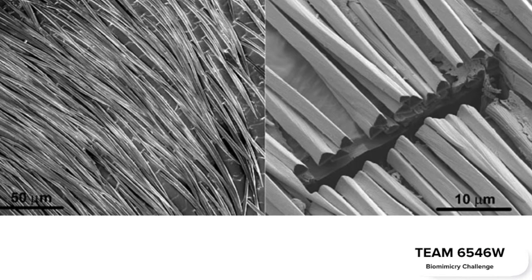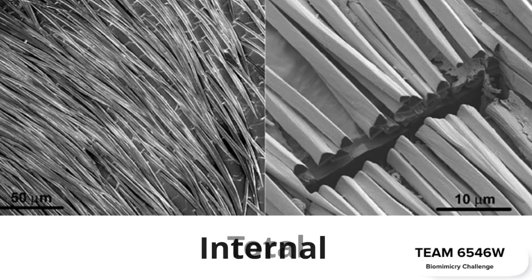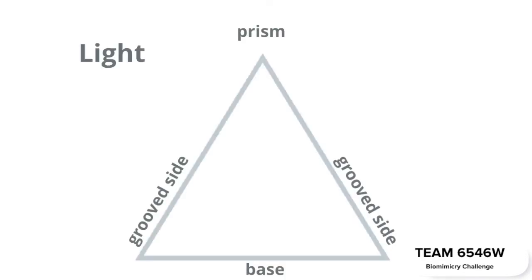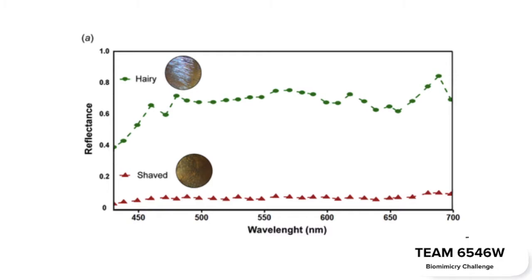The ants' hairs are also reflective due to a process known as total internal reflection, which occurs when light enters through one grooved side, reflects off the base, and exits from the adjacent corrugated side. The grooves concentrate light onto a specific part of the hair, optimizing its path of exit and maximizing the reflection.